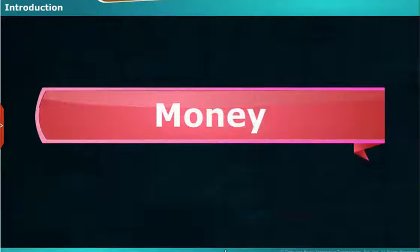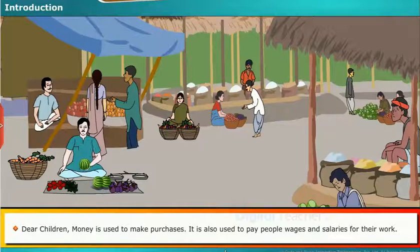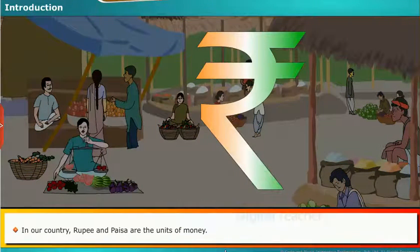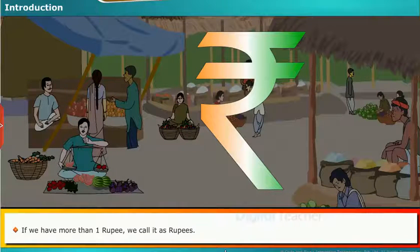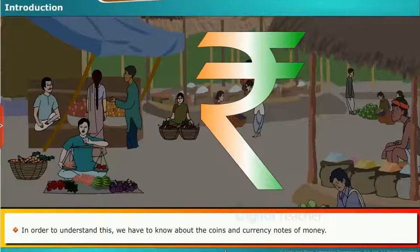Dear children, money is used to make purchases. It is also used to pay people wages and salaries for their work. In our country, rupee and paisa are the units of money. If we have more than 1 rupee, we call it rupees. In order to understand this, we have to know about the coins and currency notes of money.